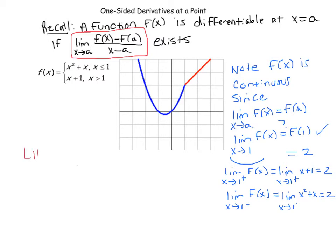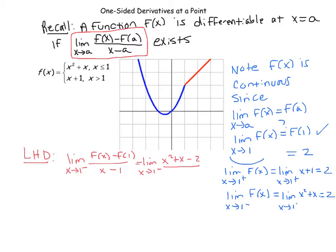Now let's check the right and left-hand derivatives. The left-hand derivative (LHD) is the limit as x goes to 1 from the left of the difference quotient. Since we're coming from the left, f(x) is x squared plus x, and f(1) was 2, so we get (x² + x − 2) divided by (x − 1). This factors as (x − 1)(x + 2) over (x − 1); those cancel, giving the limit as x goes to 1 from the left of x + 2, which is 1 + 2 = 3.